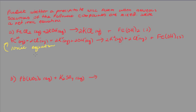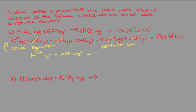Now we want the net ionic equation. The chloride ions appear on both sides — they cancel out. The potassium ions also cancel out. These are called spectator ions; they don't directly participate in the chemical reaction. So we're left with iron(II) ions plus 2 hydroxide ions producing solid iron(II) hydroxide. The reaction was between the iron(II) ions and the hydroxide ions to form solid iron(II) hydroxide.